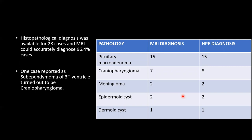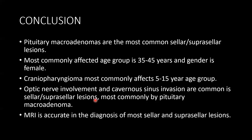Histopathological diagnosis was available for 28 cases, and MRI could accurately diagnose 96.4% of cases. One case reported as subependymoma of the third ventricle turned out to be craniopharyngioma. Conclusion: pituitary macroadenomas are the most common sellar or suprasellar lesions, most commonly affecting the 35 to 45 year age group, predominantly females. Craniopharyngioma most commonly affects the 5 to 15 year age group. Optic nerve involvement and cavernous sinus invasion are common, most commonly due to pituitary macroadenoma. MRI is accurate in the diagnosis of most sellar or suprasellar lesions.